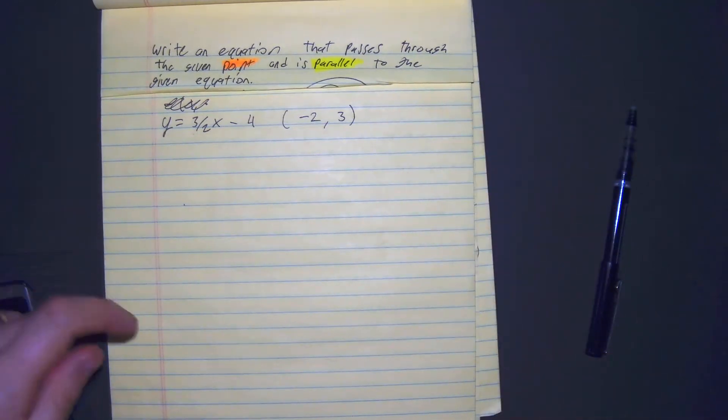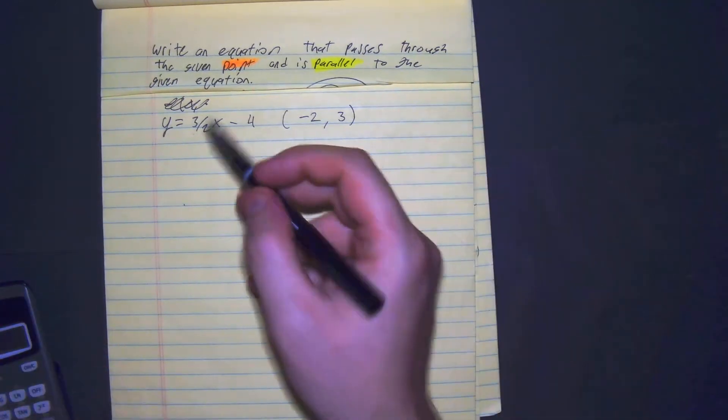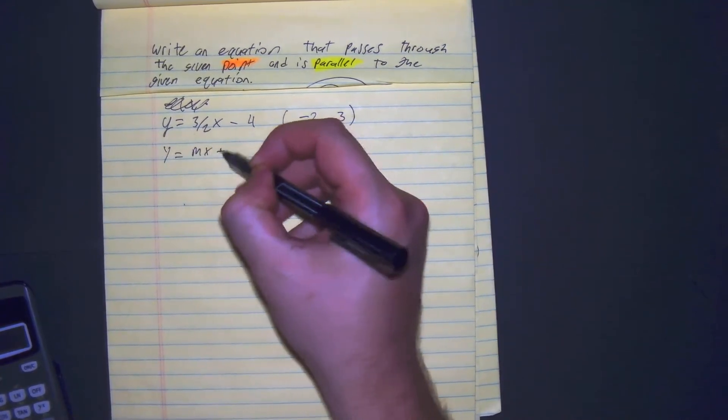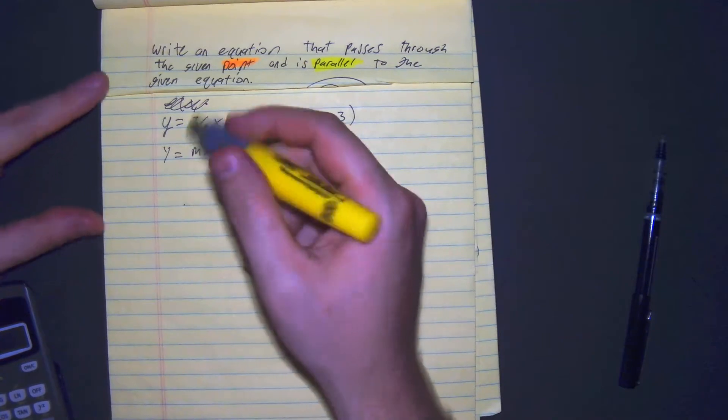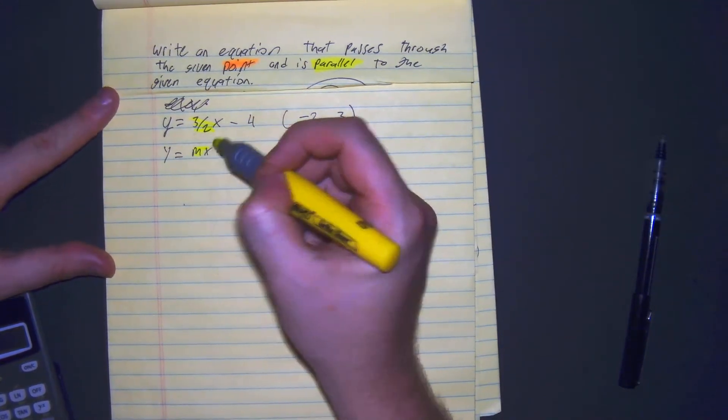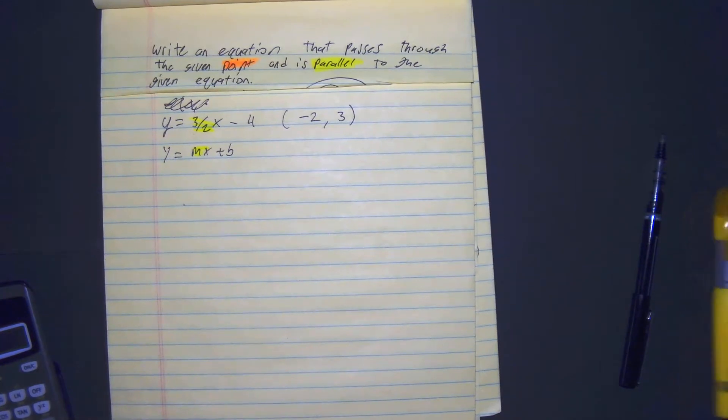So parallel pertains to the slope, and as you can see, this does follow the form of y equals mx plus b. So here, this is our slope, 3 halves, because it's next to the x, and our point.